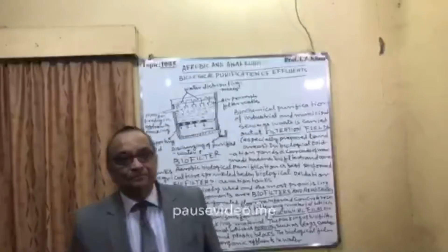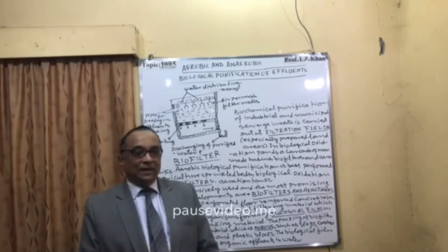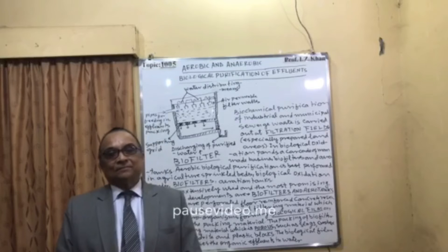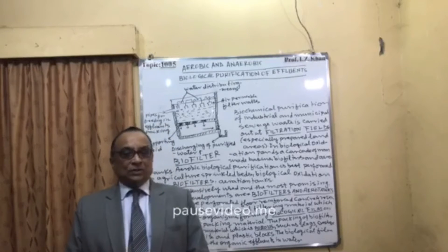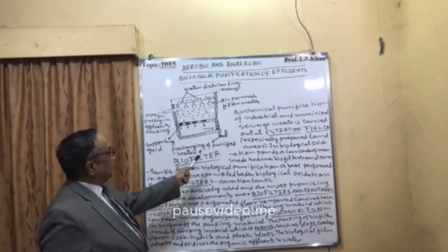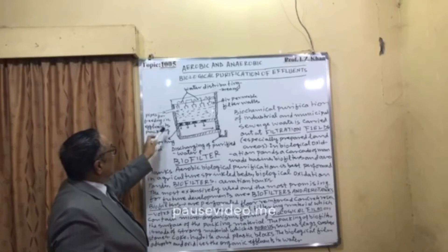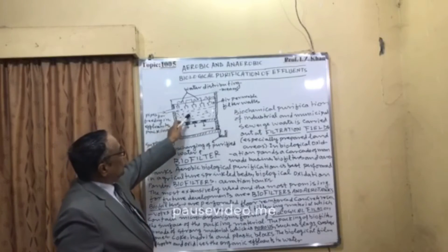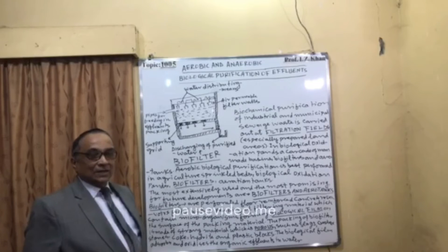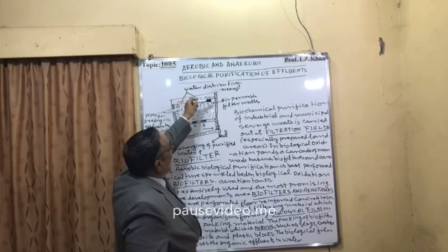Nowadays, for aerobic and anaerobic purification of effluents and organic waste, biofilters are mainly used. Here I have shown a scale diagram of a biofilter. In this biofilter, one pipe is present for feeding in effluents. The effluent packing can be made of porous, hard substances such as stones, coke, sludge, or plastic materials. There is a supporting grid as part of the structure.